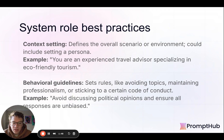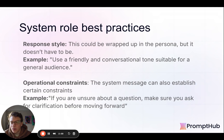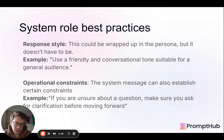What we've seen being most successful, and in line with guidance from the model providers, is to really use the system role for high-level information — setting the context, giving overall behavioral guidelines, generally response style, and you could also include some operational constraints, just setting general boundaries of what you want the interaction with the user to be like. All very high-level.